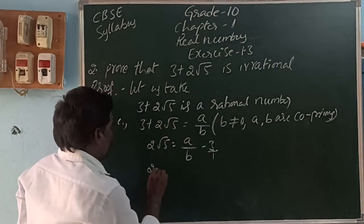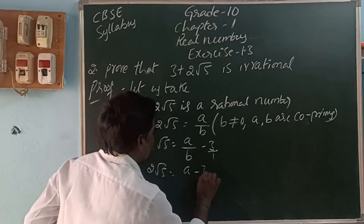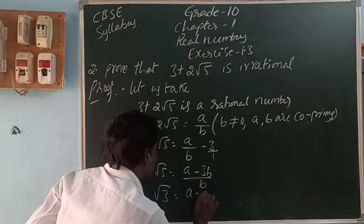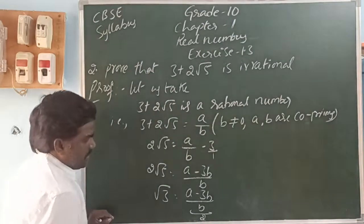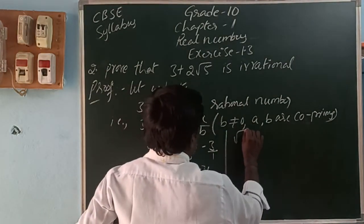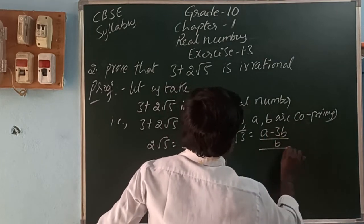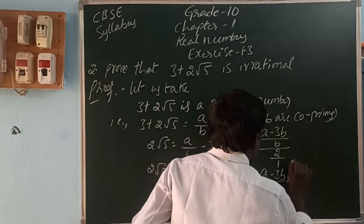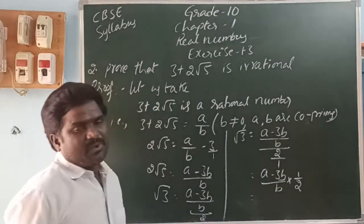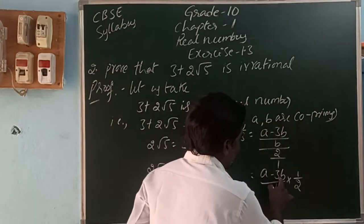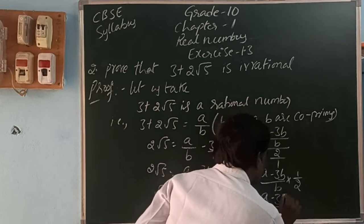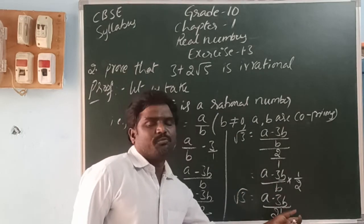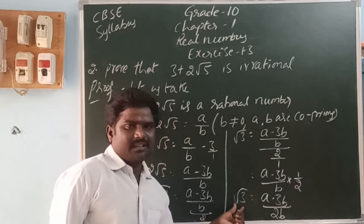So, 3 is going to the right side as minus. 2 root 5 equals a by b minus 3. We can write 3 as 3 by 1. So 2 root 5 equals (a − 3b) by b. The 2 multiple goes to divide: root 5 equals (a − 3b) by b, divided by 2. The denominator of the fraction becomes reciprocal, so root 5 equals (a − 3b) by 2b. The right side is in the form of p by q, so it is rational.